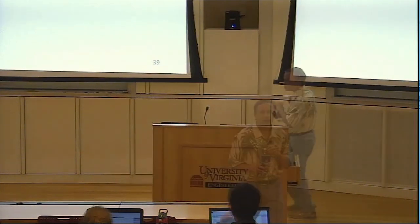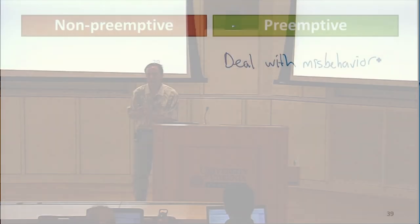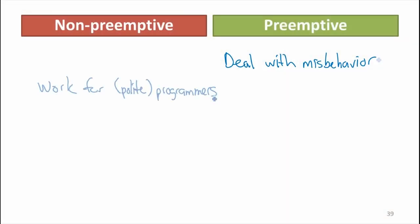Which one of those do we like better? Does it make a difference? Preemptive can deal with misbehaving programs much better. If it's non-preemptive and you want other programs to have a fair share, that's more work for the programmer. If it's preemptive, it's up to the operating system to take care of that for you. If it's non-preemptive, you've got to write your program carefully.